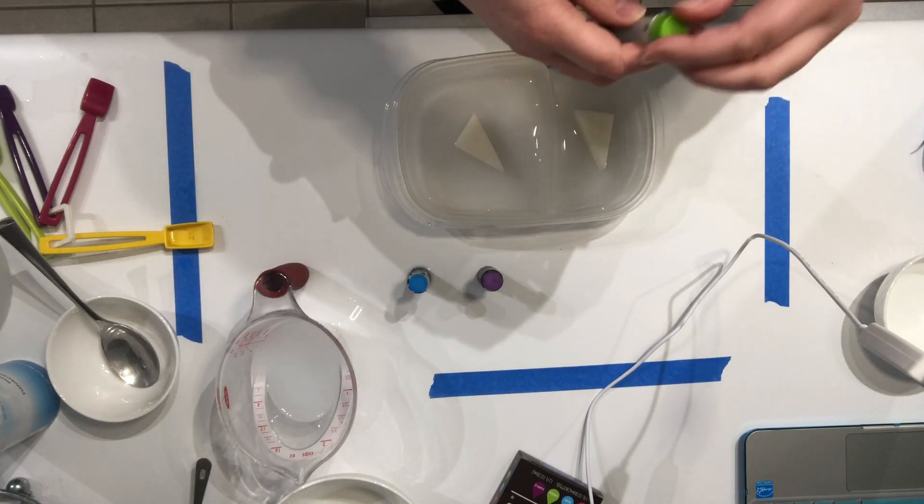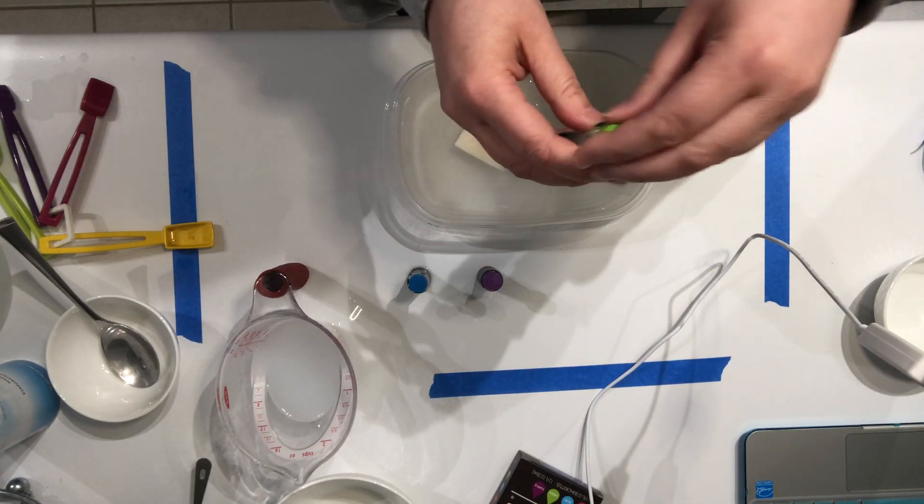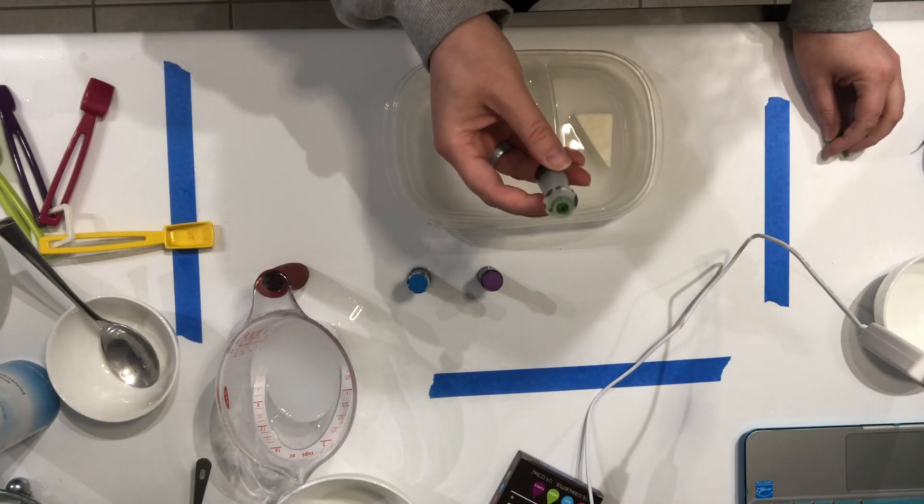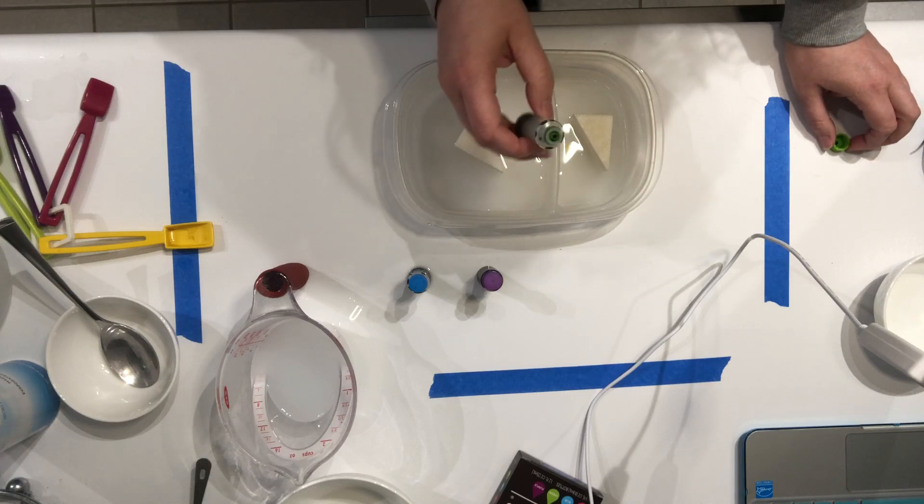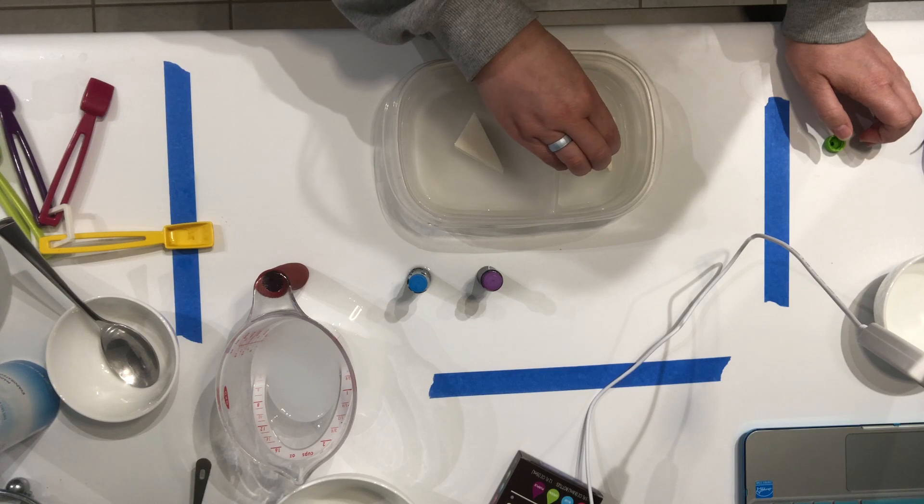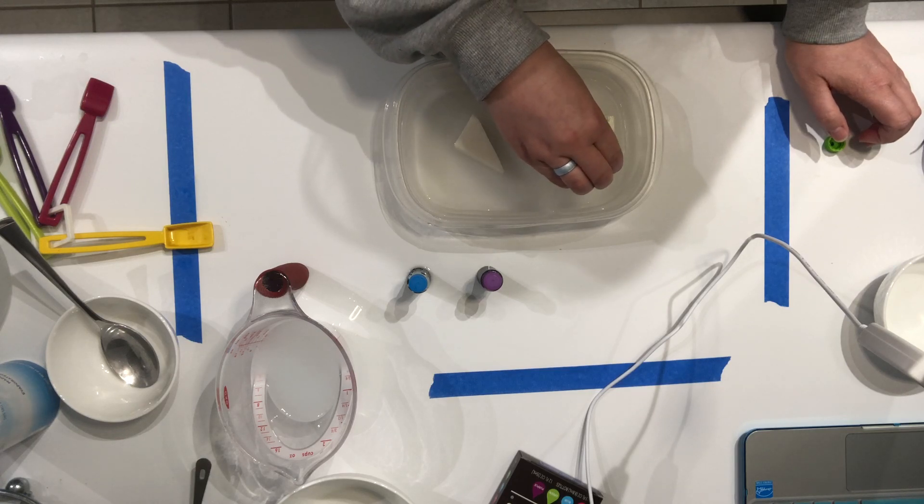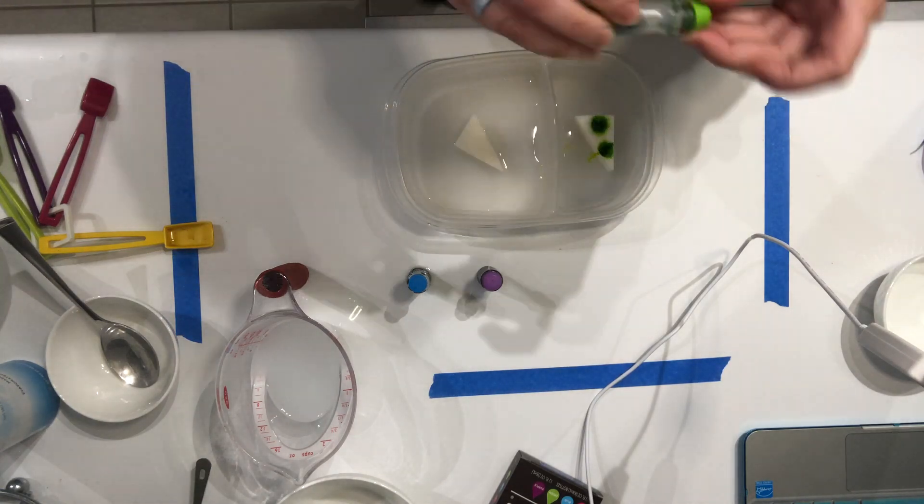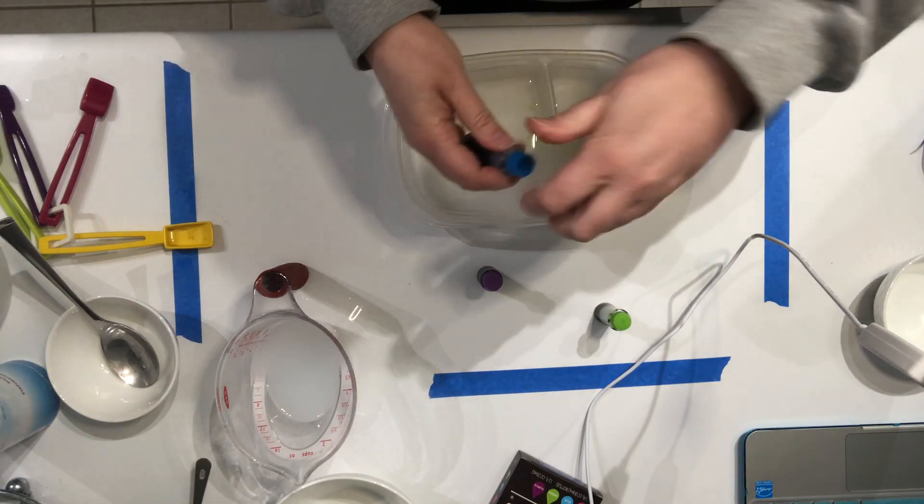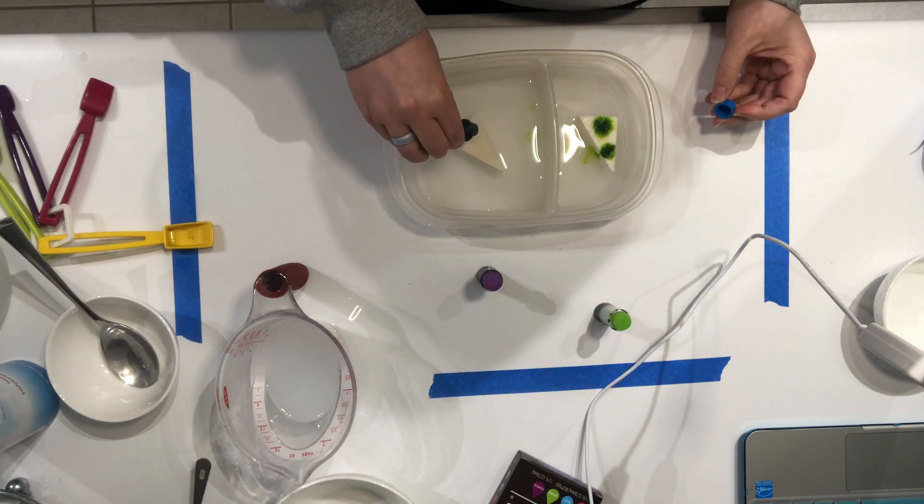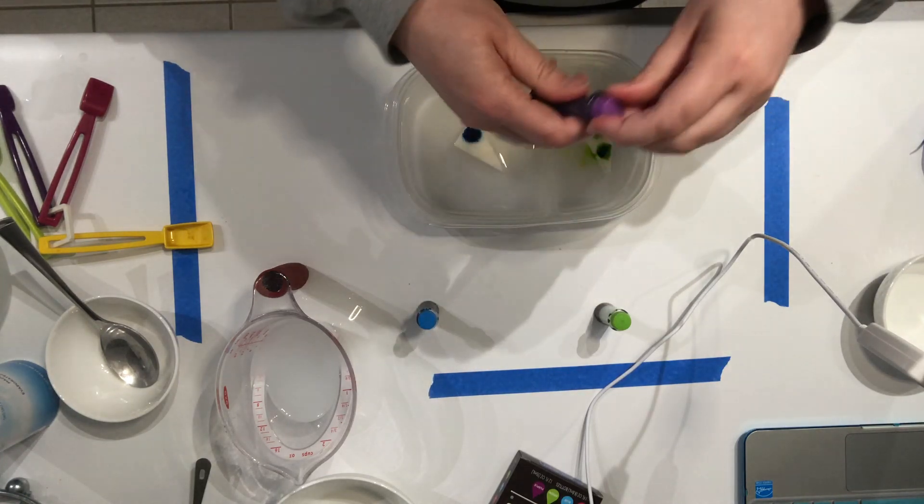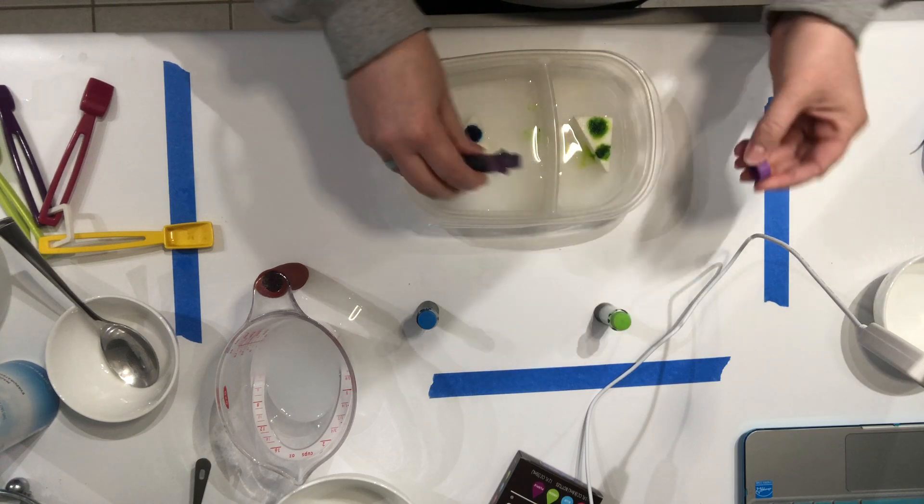And then we're going to, if you want to use food coloring and you have food coloring—again, please don't make your parents go to the store, we're trying to do this with things that we have at home—we're going to put a couple of drops just on the sponge. And then as the crystals grow, they should turn, in that case, green. And over here I'm going to do blue and the best color in the world, purple.